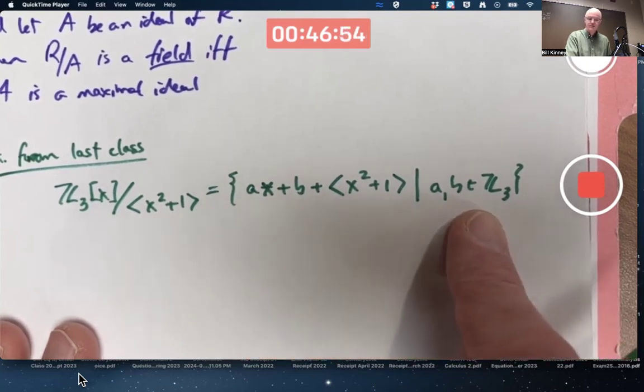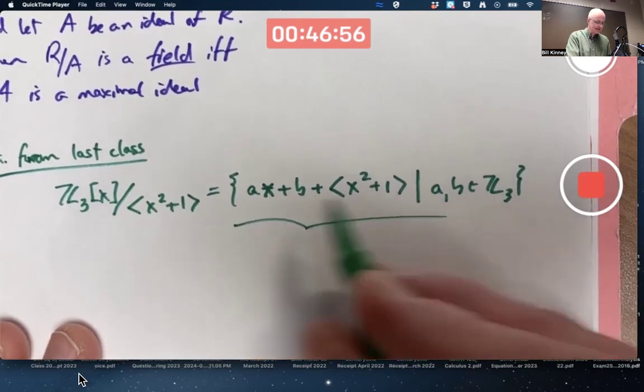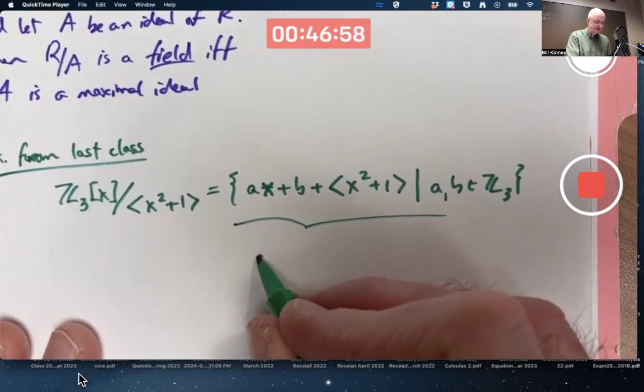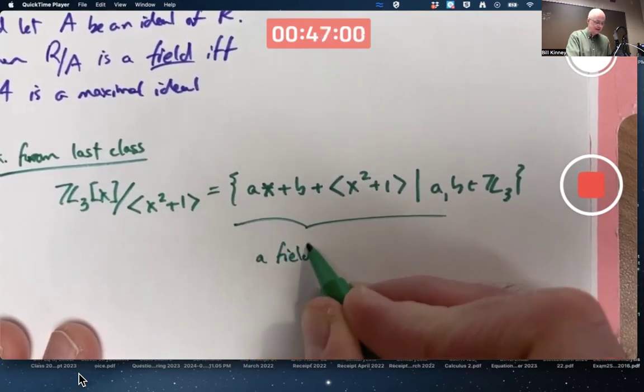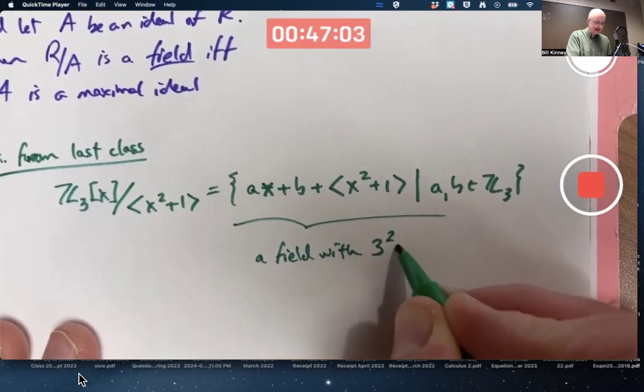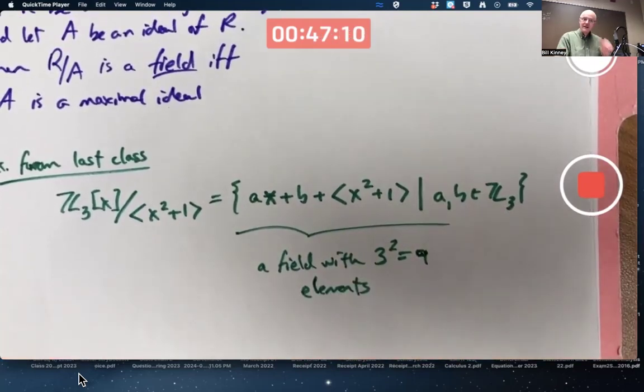There's three choices for A, three choices for B. This had nine elements. And in fact, it's a field with three squared equals nine elements. By this theorem...